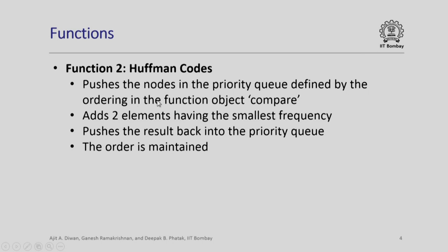The second function is actually the main function which will create the Huffman code. What it does is it will push the node in the priority queue which is defined by the ordering of the function object called compare.